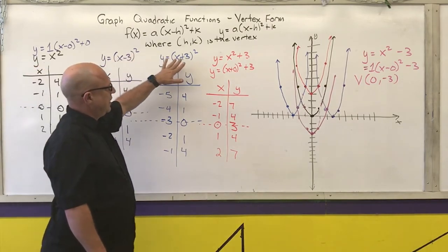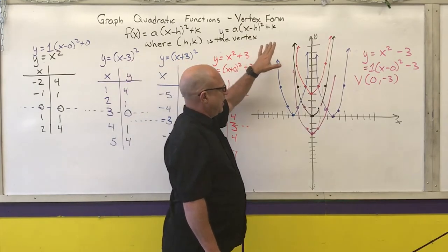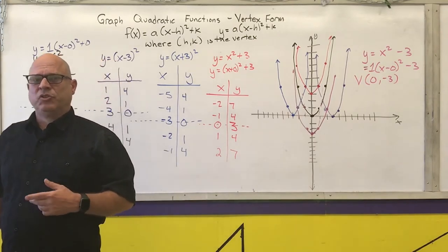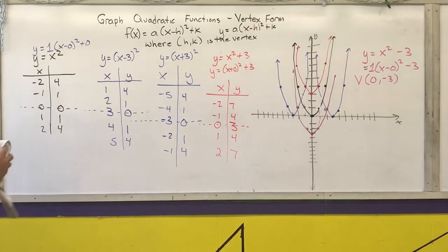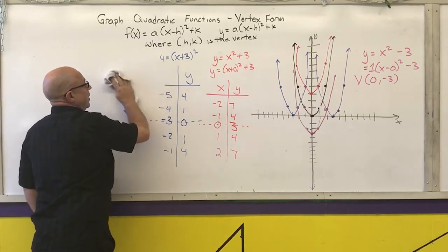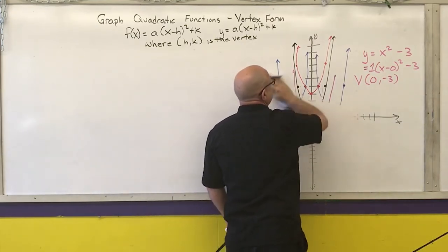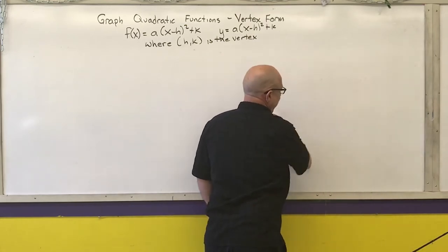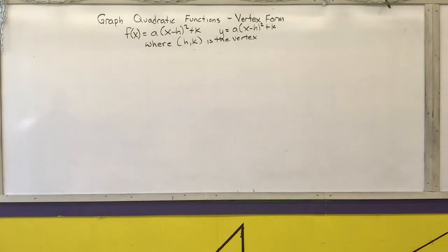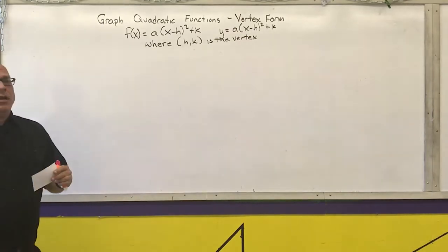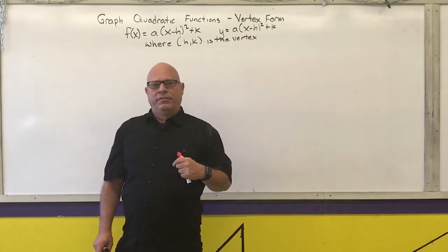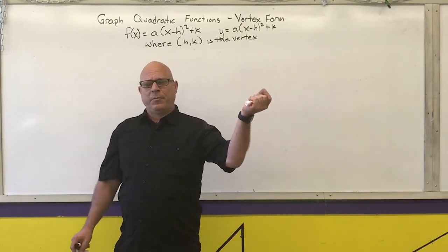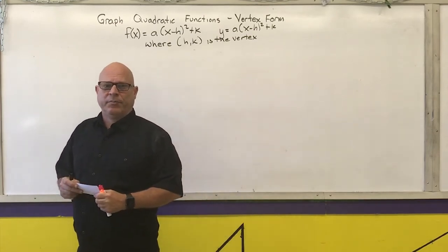I've shown you shifts individually inside and outside the parentheses. Now I'm going to show you examples where I combine all of that — something inside, something outside, and possibly something multiplying on the outside. On each separate graph I'll first graph y equals x squared as the reference. As you go further, I'll be more concerned with you telling me what the graph looks like compared to the parent function — shifted two units left, three units up, skinnier or wider.